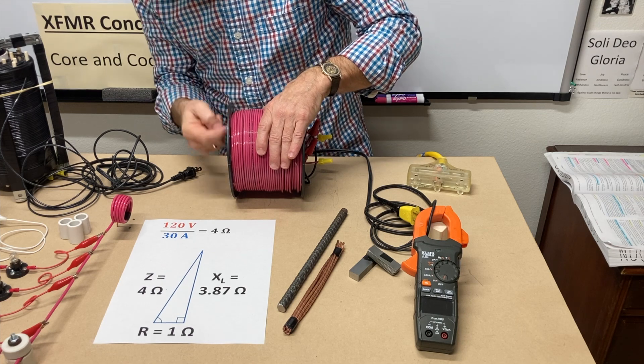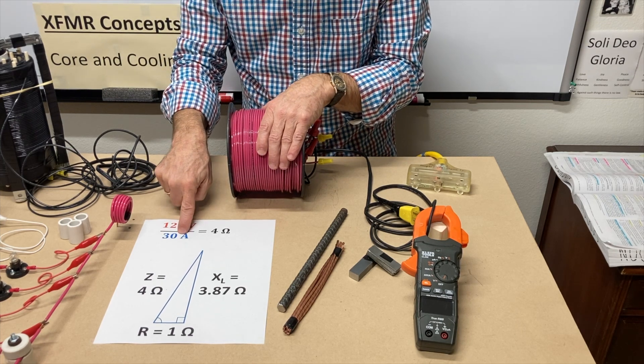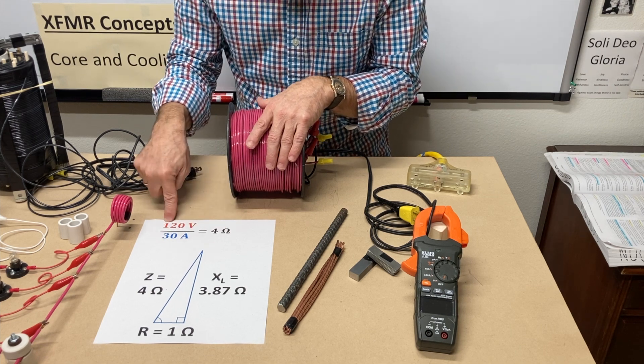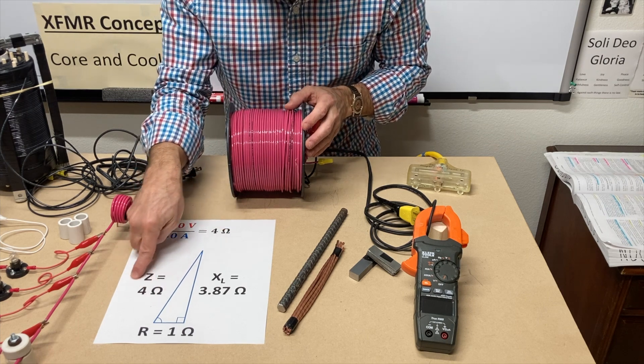But when we had it in the coil, applied the same 120 volts, only 30 amps flowed. Did a little Ohm's Law.